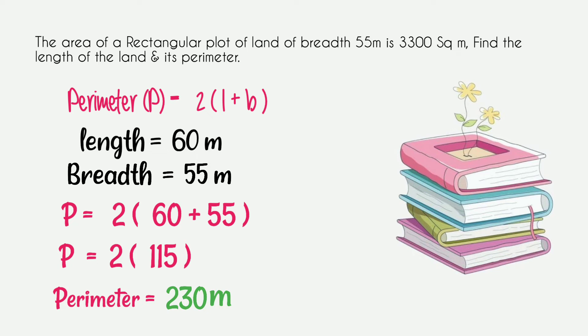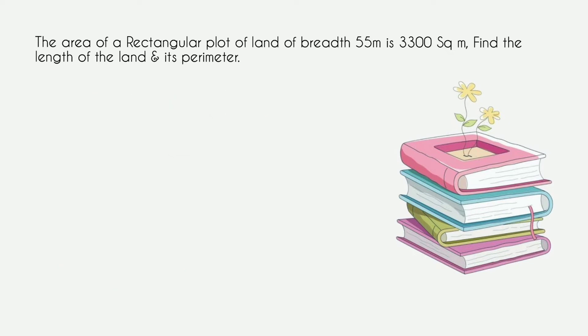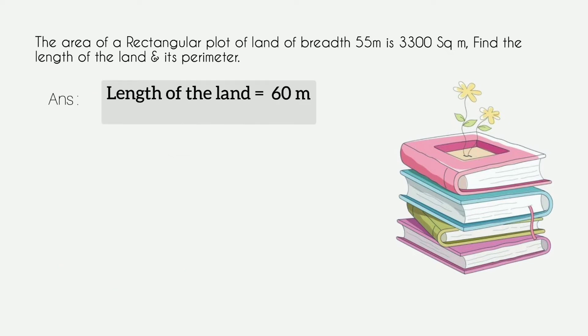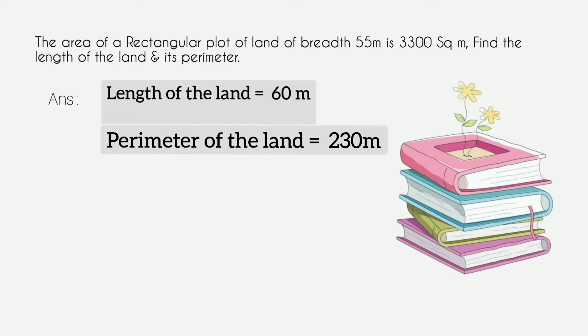The unit of area is square meters, as given in the question — area is always expressed with squares. The answers are: length of the land is 60 meters and perimeter of the land is 230 meters.